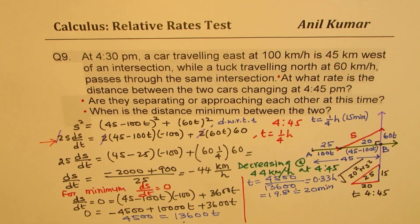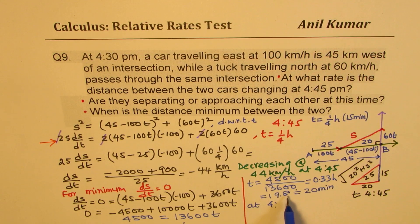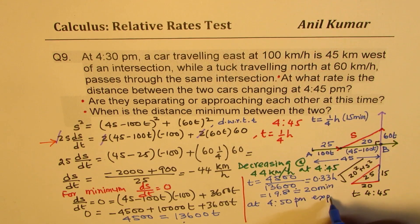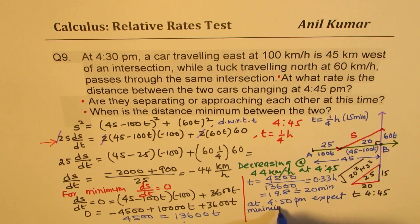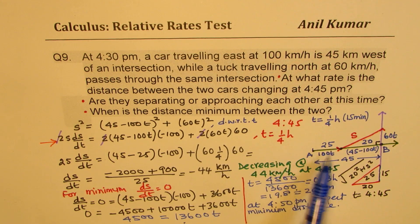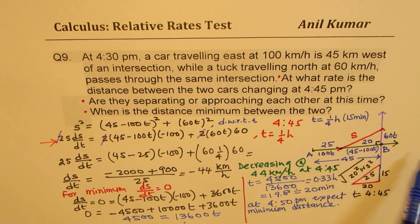So the minimum distance occurs at approximately 4:50 PM. This verifies that after 15 minutes at 4:45, the distance is still decreasing, and after 4:50 it will start increasing — with minimum distance occurring at around 4:50 PM. That is how you solve this particular question. I hope you find it interesting and useful. Feel free to write your comments and share your views. Thanks for watching and all the best.